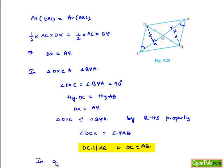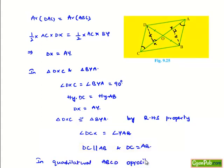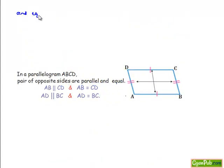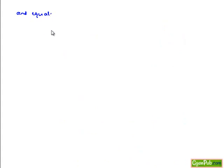Therefore, in quadrilateral ABCD, opposite sides are parallel and equal. A quadrilateral in which one pair of opposite sides is both parallel and equal is a parallelogram. Therefore, ABCD is a parallelogram.